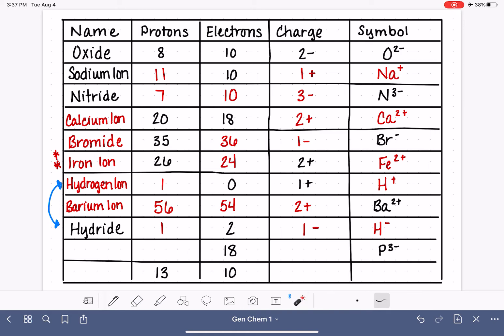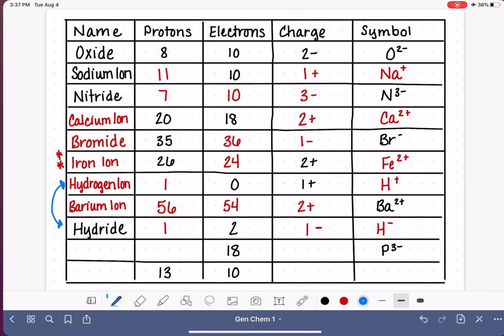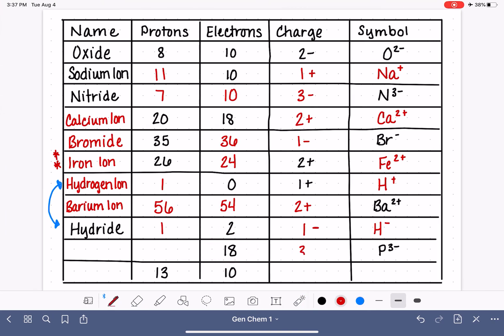We've got 2 more examples. Here we have P, 3 minus. We know that we have 18 electrons. With a 3 minus charge, that tells us that we have 3 more electrons than protons. So that means we must have 15 protons. P is the symbol for phosphorus. So this is a negatively charged ion. This is phosphide.